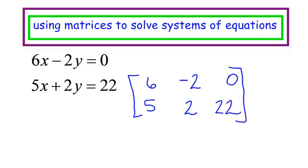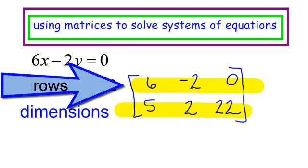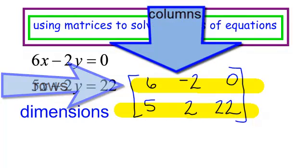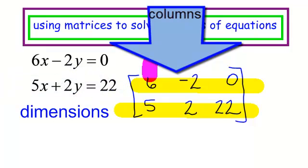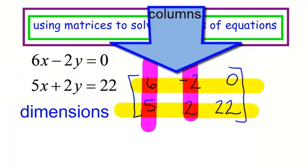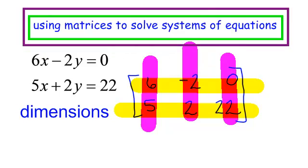I need to know about the dimensions. We list the rows first — I have 2 rows — and then I list the number of columns. In the columns I have 1, 2, 3 columns. So the dimensions of this matrix are 2 by 3.